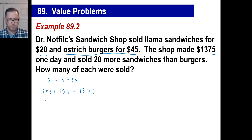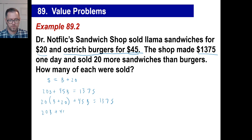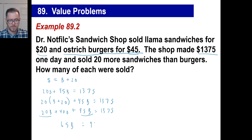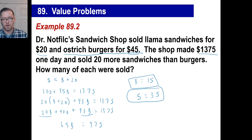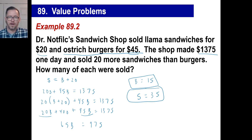Using substitution, S equals B plus 20, so: 20 times (B plus 20) plus 45B equals 1375. That gives 20B plus 400 plus 45B equals 1375, so 65B equals 975, and B equals 15. They sold 20 more sandwiches than burgers, so sandwiches equal 15 plus 20, which is 35. Make sure your answer is an integer — you can't sell 47.6 sandwiches!